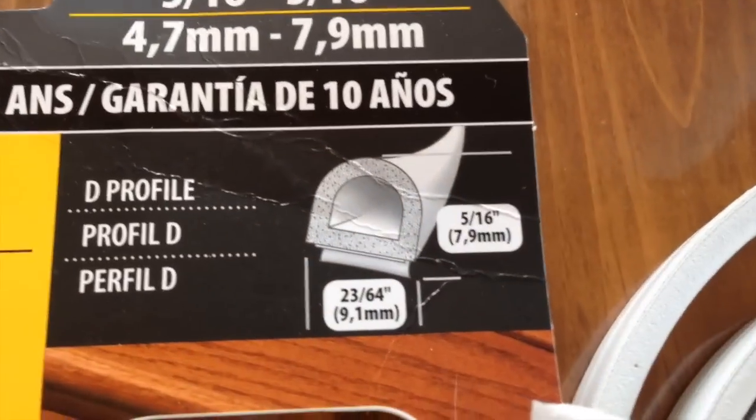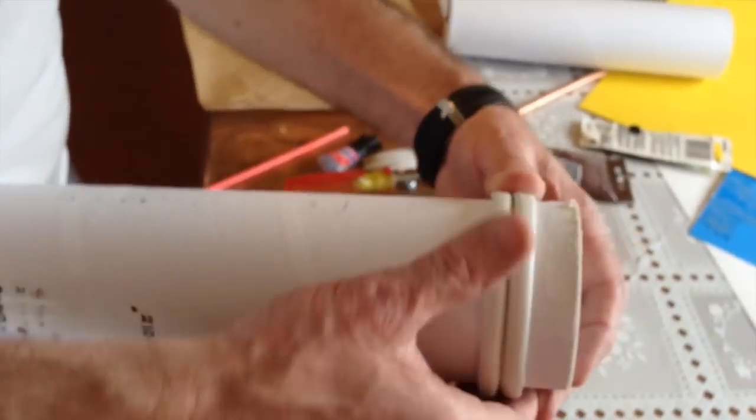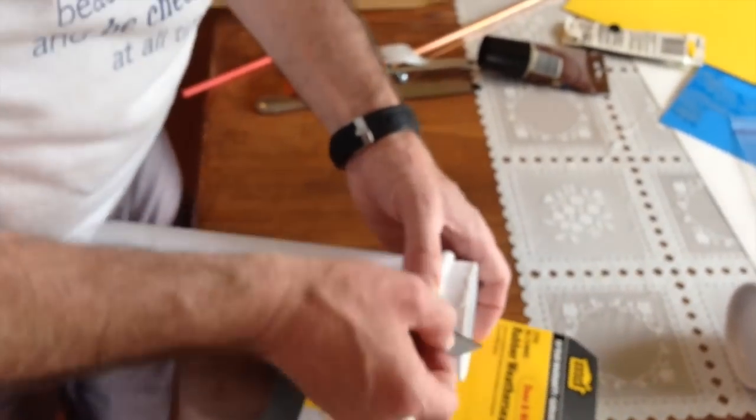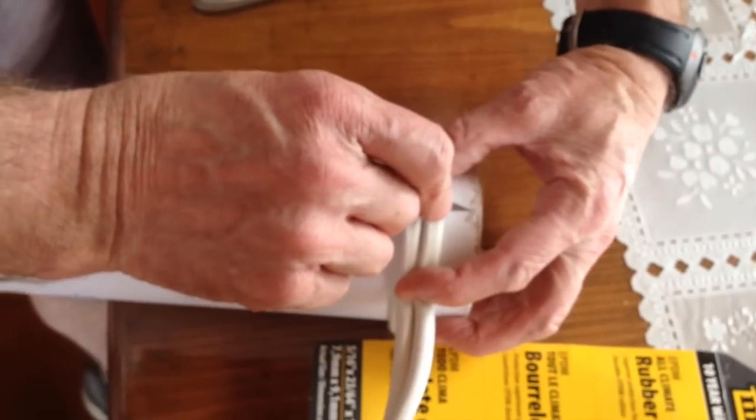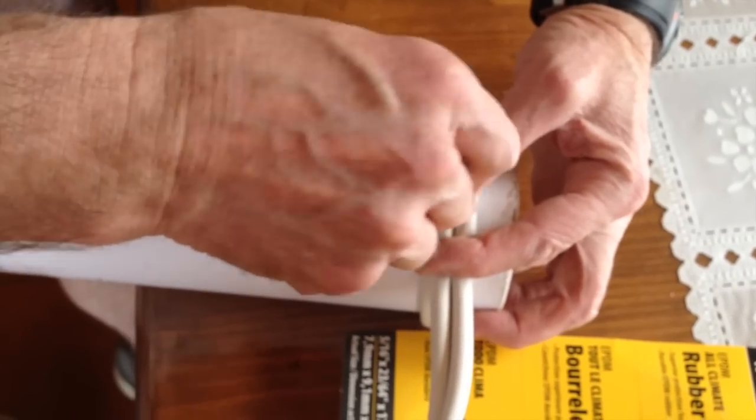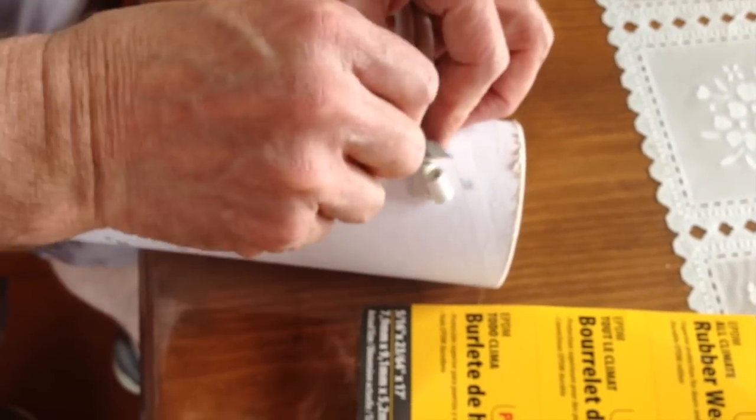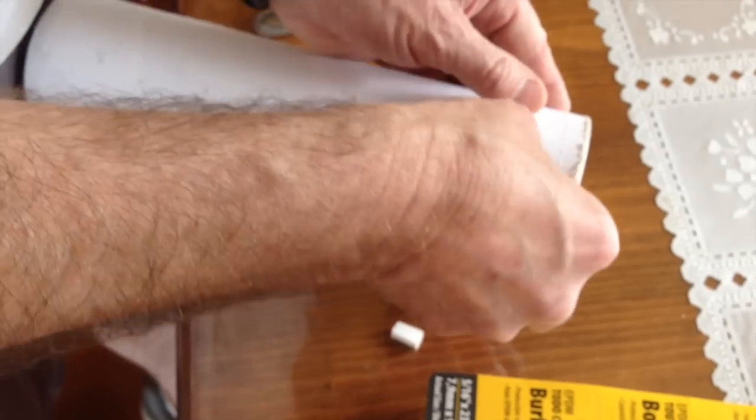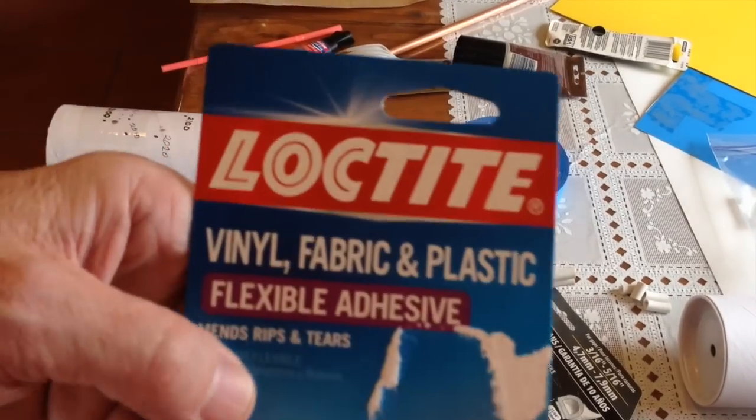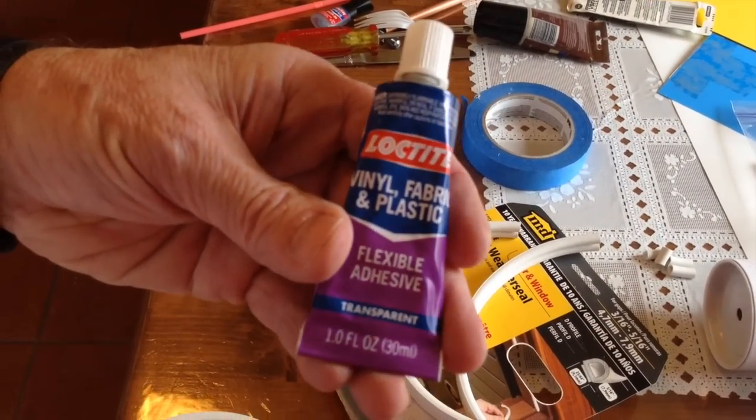Lengths of rubber weather-stripping are measured to fit around the tube. The ends are glued using flexible vinyl adhesive to form rings that are attached to the ends of the tube.